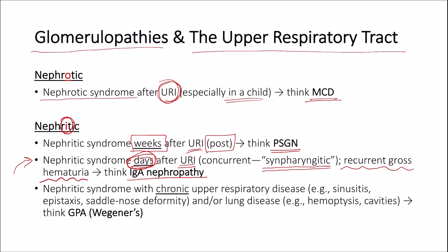Nephritic syndrome with chronic upper respiratory disease, such as chronic sinusitis, epistaxis, saddle nose deformity, and/or lung disease — for example hemoptysis or lung cavities on X-ray — think granulomatosis with polyangiitis, previously known as Wegener's granulomatosis.